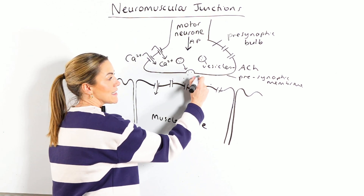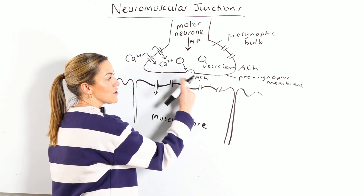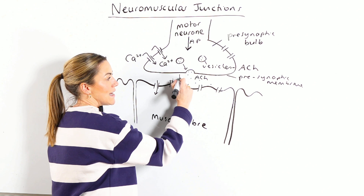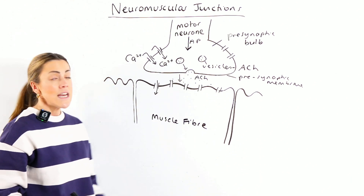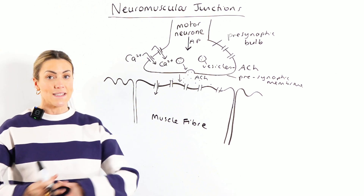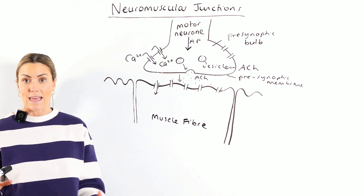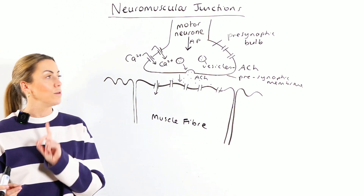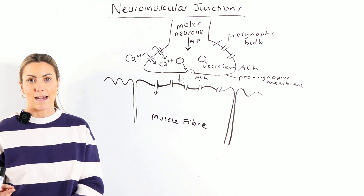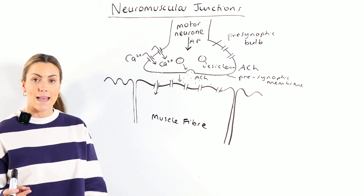The acetylcholine, which you can see here, is going to diffuse across the synaptic cleft. So far, that's exactly the same as the story we learn for a cholinergic synapse — exactly the same.